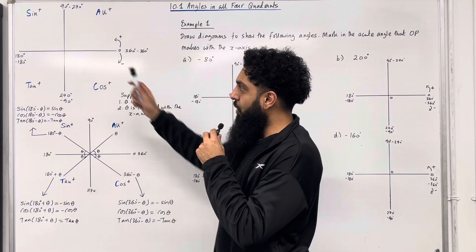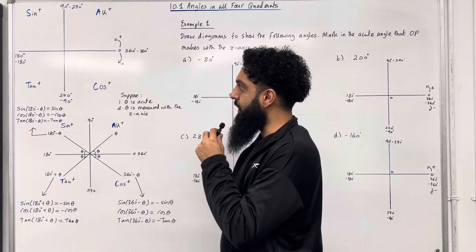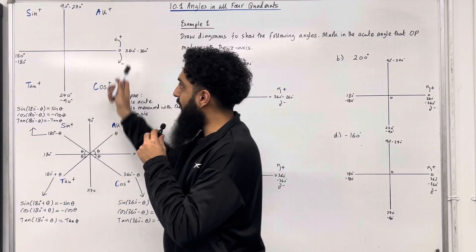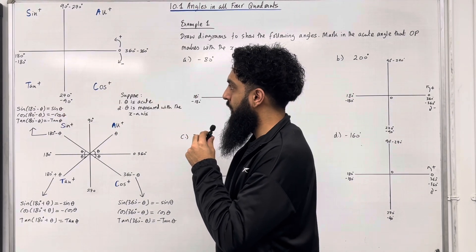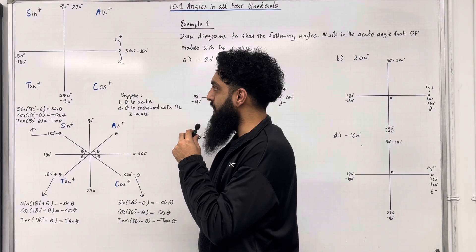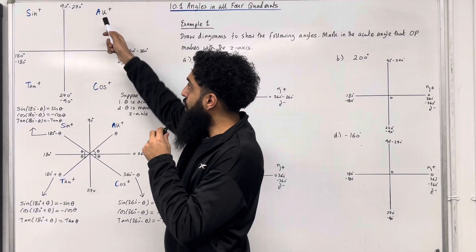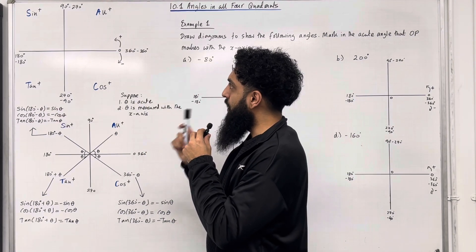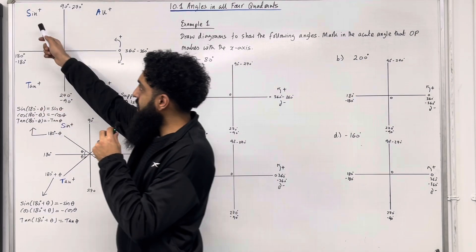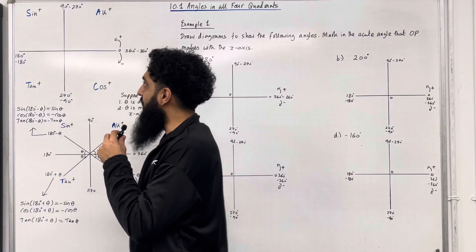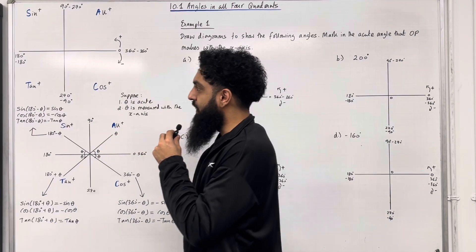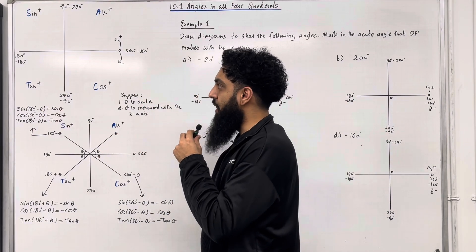We have a special diagram called the CAST diagram — C, A, S, T — in that order, creating CAST. In the C quadrant, cosine is positive; sine and tan are negative. In the A quadrant, all is positive — sine, cos, and tan. In the S quadrant, sine is positive; cosine and tan are negative. And in the T quadrant, tan is positive; sine and cosine are negative.